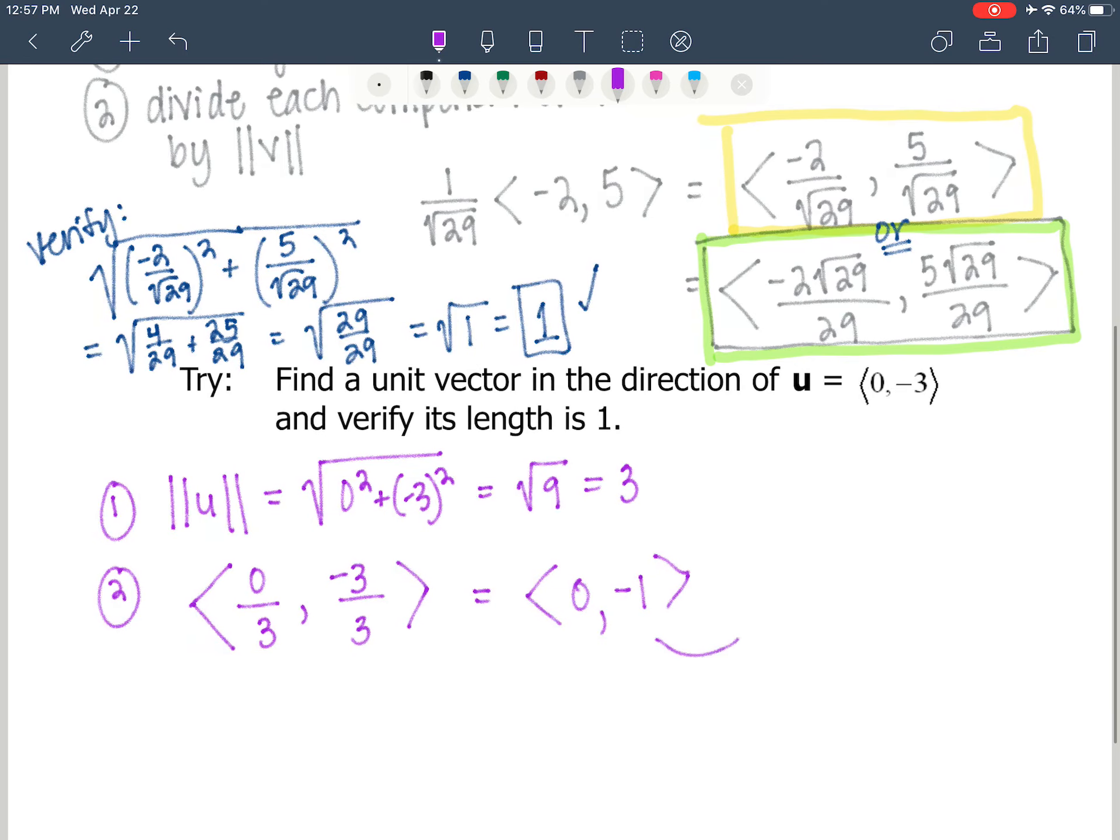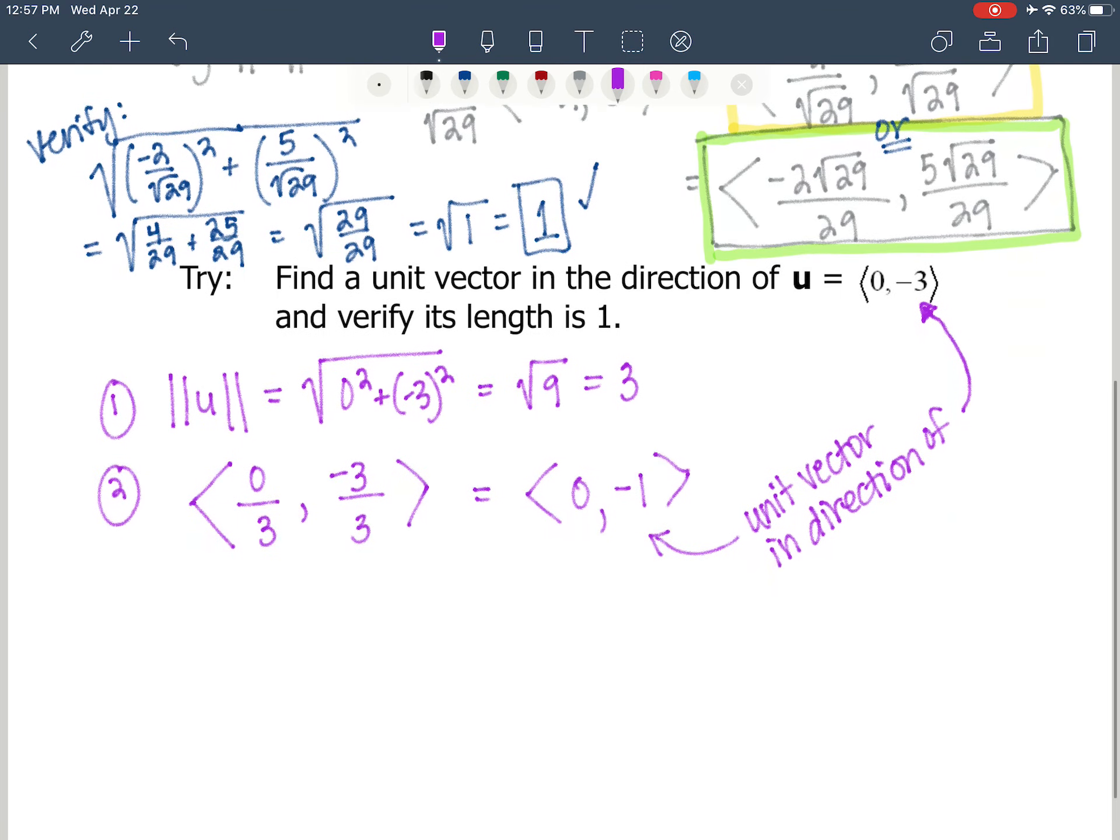Which gives me a vector of 0, negative 1. This right here is my unit vector, my unit vector in the direction of vector u. Now I'm going to show you vector u. So I'm going to verify it, not necessarily verify its length is 1, but I'm going to draw a picture of it.